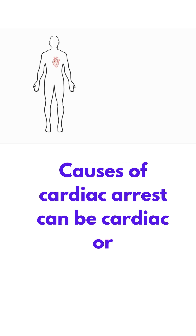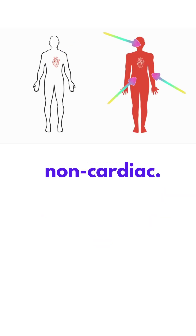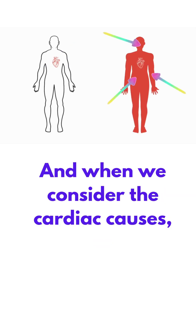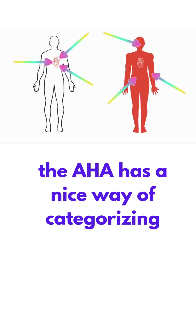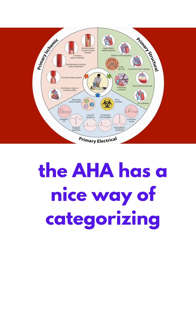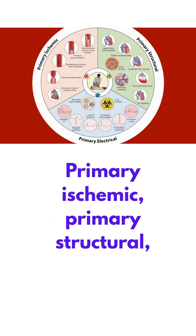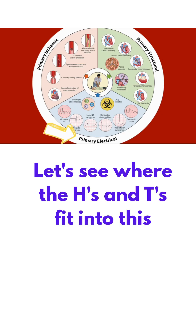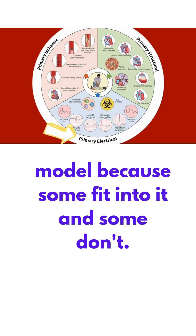Causes of cardiac arrest can be cardiac or non-cardiac. When we consider the cardiac causes, the AHA has a nice way of categorizing them: primary ischemic, primary structural, and primary electrical. Let's see where the H's and T's fit into this model, because some fit into it and some don't.